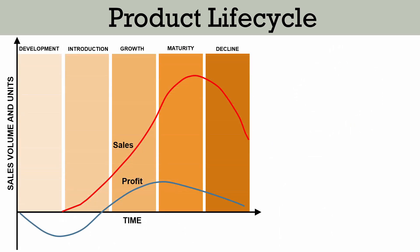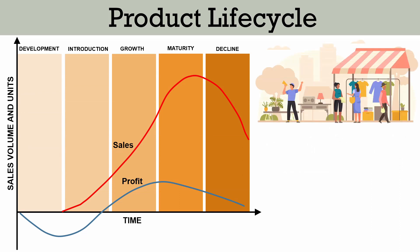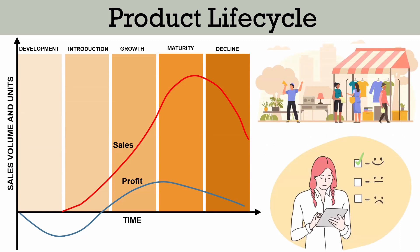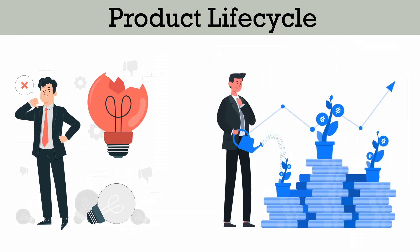There are four stages in a product life cycle: introduction, growth, maturity and decline. These are the stages that a product can possibly experience. The life of the product depends upon the capacity of the product to meet consumers' expectations, hence it stays in the market as long as it satisfies its users. The product life cycle can be long for some products and short for others — some products may fail instantly while some survive for a long term. Not all products pass through all the stages as they may fail at initial stages itself.